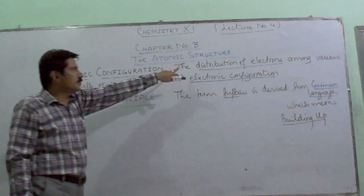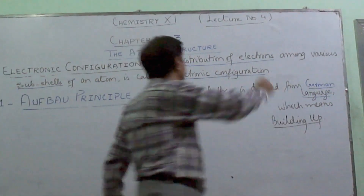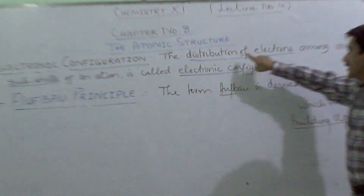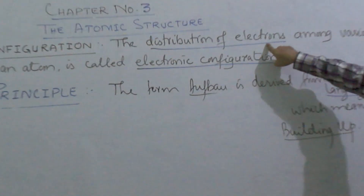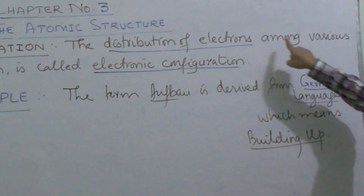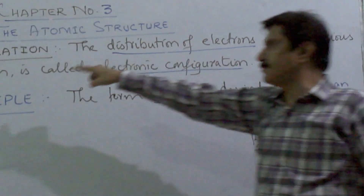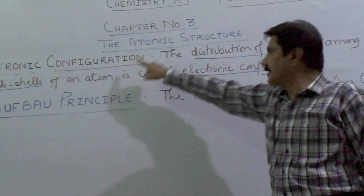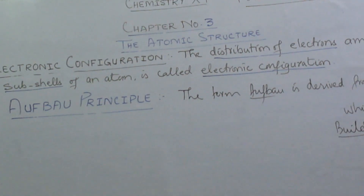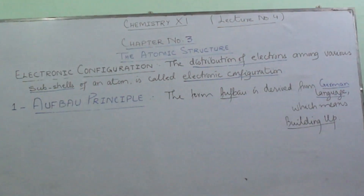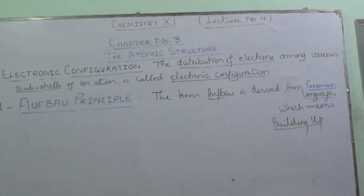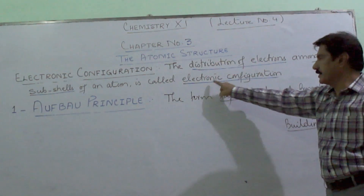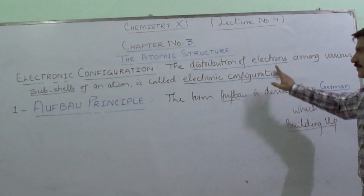Dear students, electronic configuration is the process by which we distribute the electrons among various subshells of an atom. The distribution of electrons among various subshells of an atom is called electronic configuration.